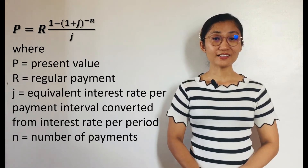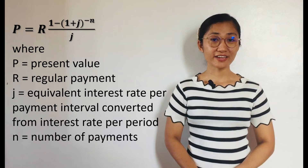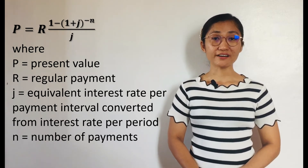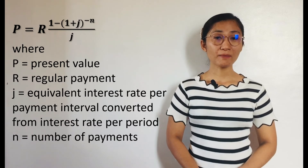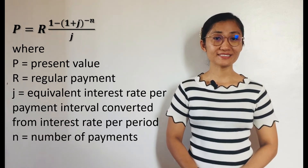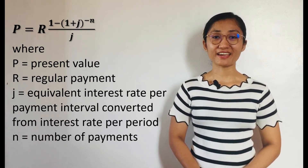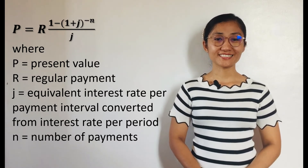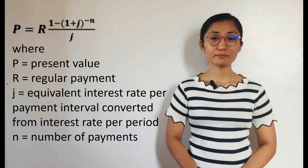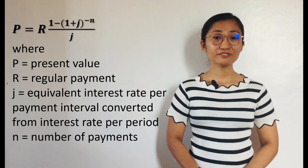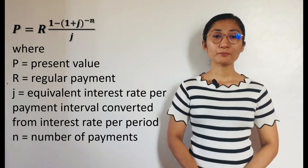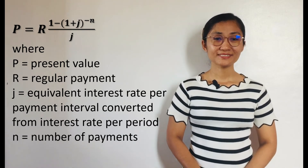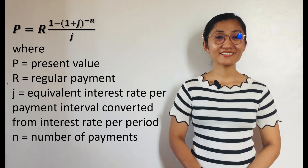To solve for the present value P of a general ordinary annuity, we use the formula P equals R times 1 minus the quantity 1 plus J raised to the negative N, over J. Where R is the regular payment, J is the equivalent interest rate per payment interval converted from the interest rate per period, and N is the number of payments. So let us use this formula in the following examples.